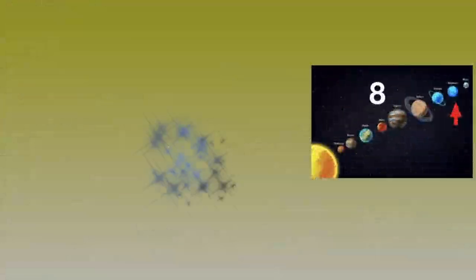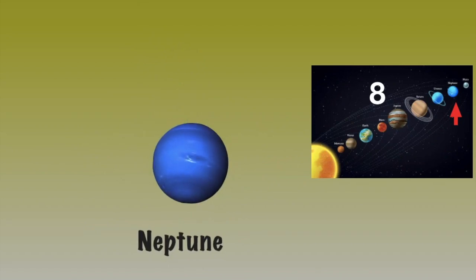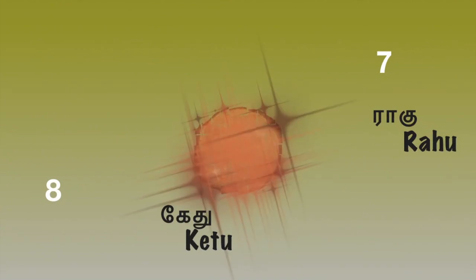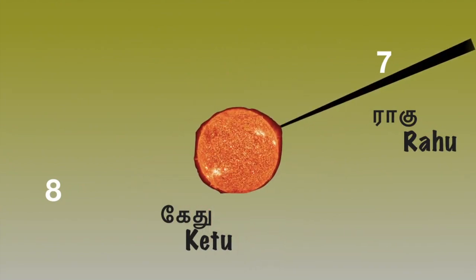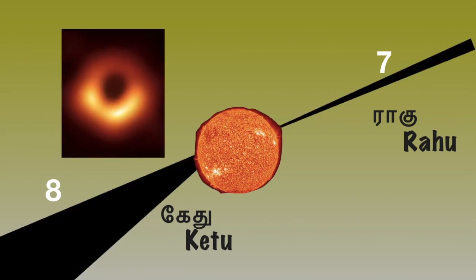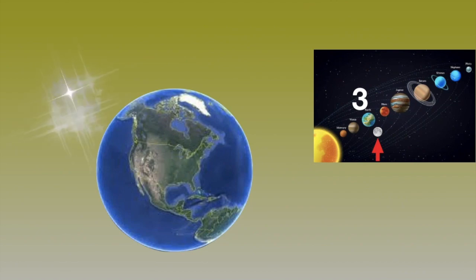In the traditional way, instead of Uranus and Neptune, Ragu and Kedu are considered as the seventh and eighth planet. From the Sun, the magnetic wave's thinner part is Ragu and the broad part is Kedu. Instead of Earth, Moon is considered as the planet as per Tamil tradition.